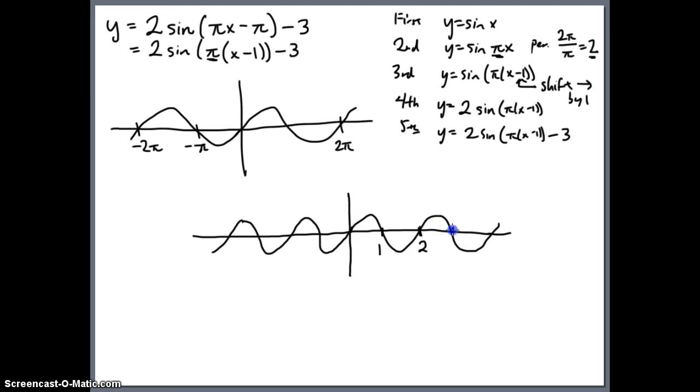That means this next crossing is going to be 3, that downward crossing, this upward crossing is going to be 4, and likewise, there's negative 1, negative 2, negative 3, and negative 4. So that takes care of the second graph.